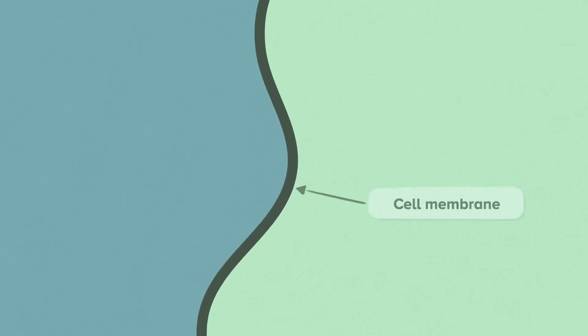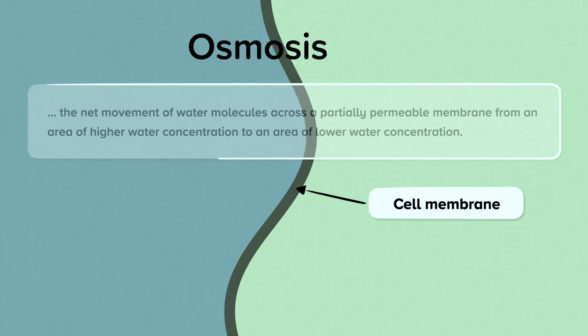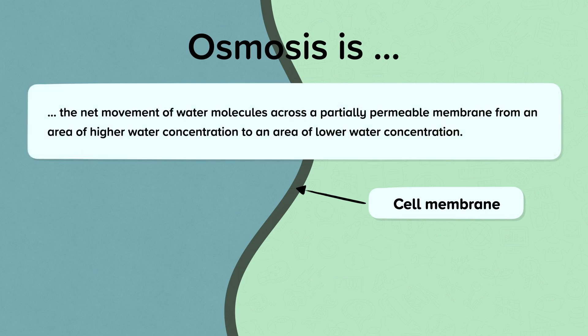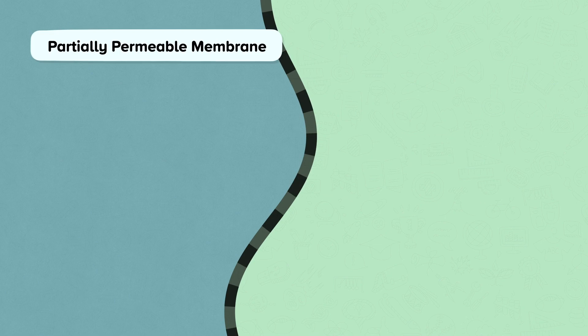Here we have a cell and this is its cell membrane. The cell membrane controls what enters and leaves the cell. Osmosis is the net movement of water molecules across a partially permeable membrane from an area of higher water concentration to an area of lower water concentration. The cell membrane is a partially permeable membrane, which allows some things to pass through and not others.